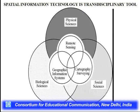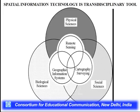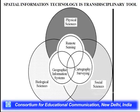The combination of these three questions — what, where, and when — describes spatial location, condition, trends, pattern, and modeling. Through this diagram you can see how spatial information technology may be considered a transdisciplinary tool where people from physical sciences, social sciences, and biological sciences can contribute different ideas, using techniques like remote sensing, geographic information systems, cartographic surveying, and GPS as a data-collecting tool.